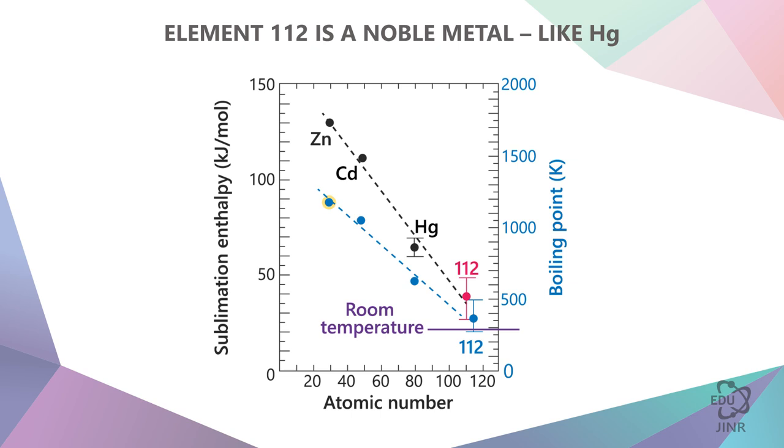The boiling point for zinc is quite high, but still not as high as for other metals. This is it for cadmium, mercury lies here, and here for element 112.